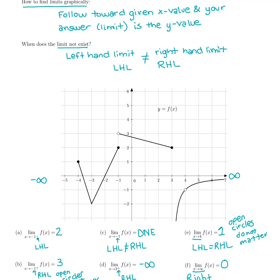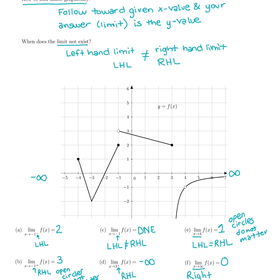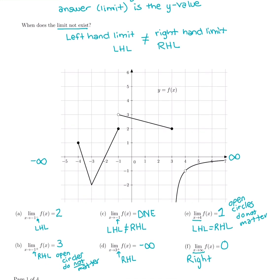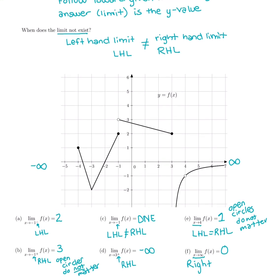Here's a summary: follow toward X and your answer is whatever Y value you get close to. The only time the answer is DNE is when you have a two-sided limit and your fingers don't meet — you fall in from the left and get a different answer compared to falling in from the right. Otherwise, if you get to the same number — whether it's an open circle, closed circle, or just a regular part of the line — the limit does exist. A positive after the number indicates a right-hand limit; a negative after the number indicates a left-hand limit.